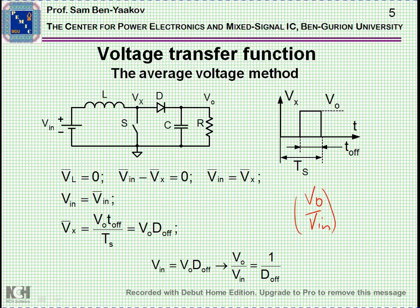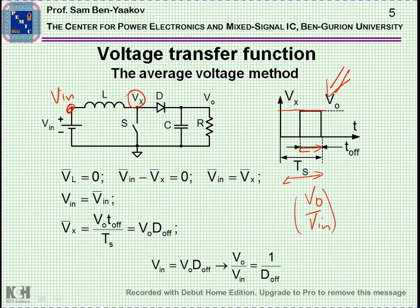We already know that the average voltage on this side is V in. The average voltage on this side can be calculated from this waveform, in which this is the period, this is the time that the transistor or the switch is off, and this is the height of V out. The average will be V out times T off divided by Ts.